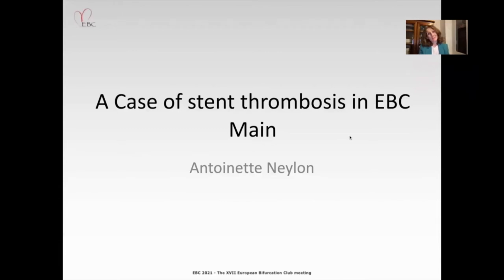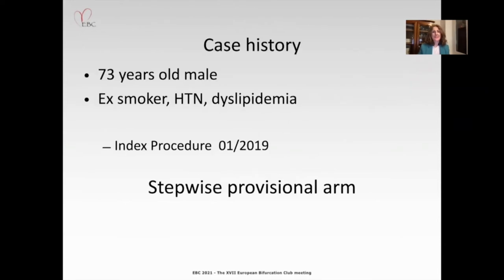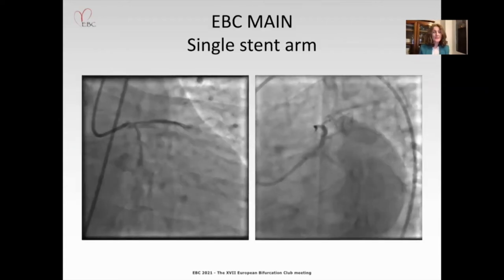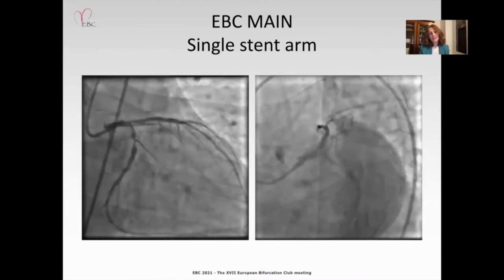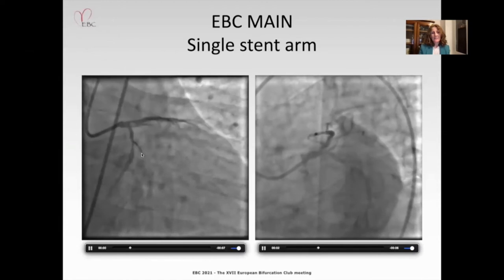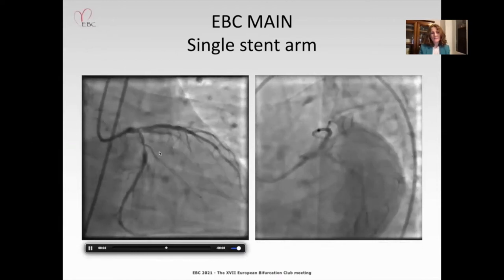The next speaker is Antoinette Neylon, who will share a stent thrombosis noticed during the EBC MAIN trial. Dear Chairman, thank you for the opportunity to present at EBC 2021. I'm going to show a case of stent thrombosis from the EBC MAIN trial. This is a 73-year-old male, an ex-smoker with history of hypertension and dyslipidemia. For symptoms of angina with a positive stress test, he was randomized in January 2019 to the stepwise provisional arm. We can see a distal left main lesion Medina 0-1-1 with a second lesion in the mid-circumflex deemed a separate lesion from the bifurcation, and quite significant calcification at the distal left main extending to both circumflex and LAD.